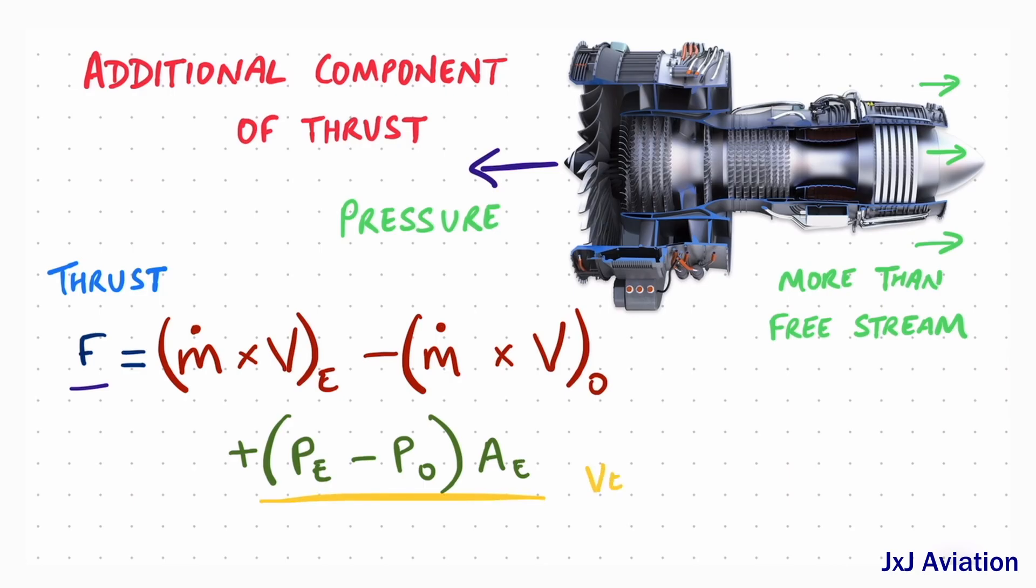Normally, the pressure component is very small when compared to the momentum component. The jet engine nozzle is designed such that the exit pressure would be equal to the free stream pressure. So the pressure component in the thrust equation becomes zero.